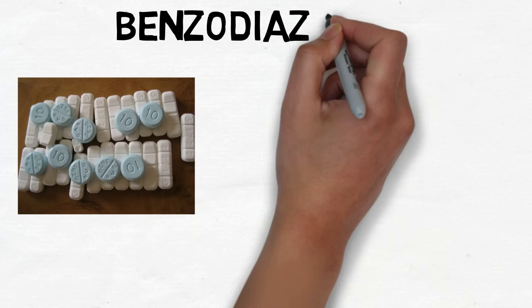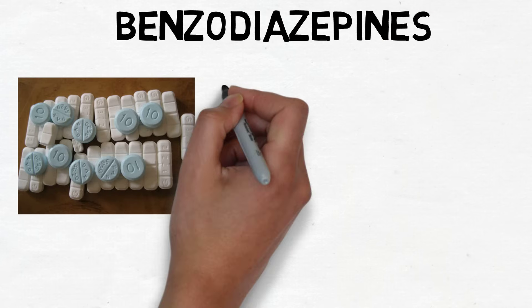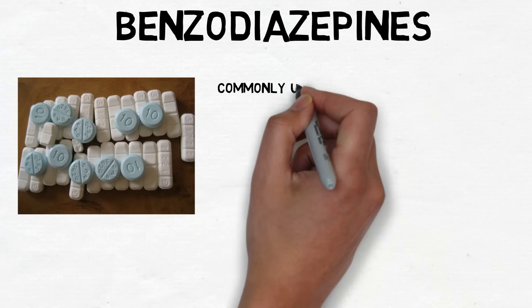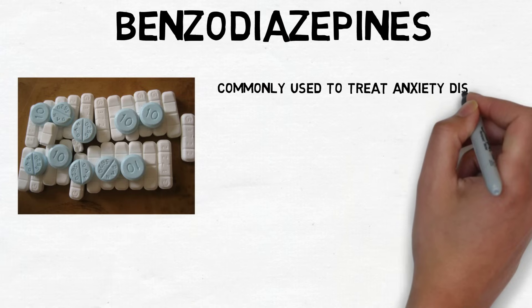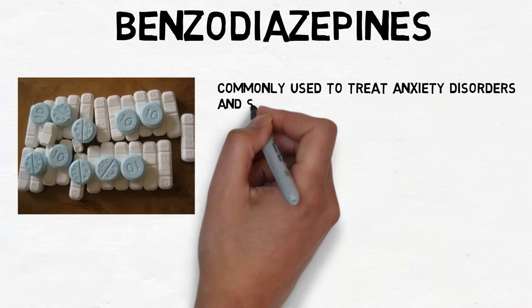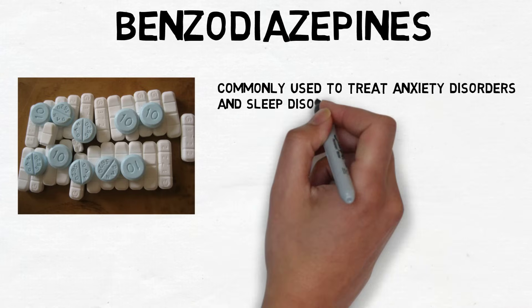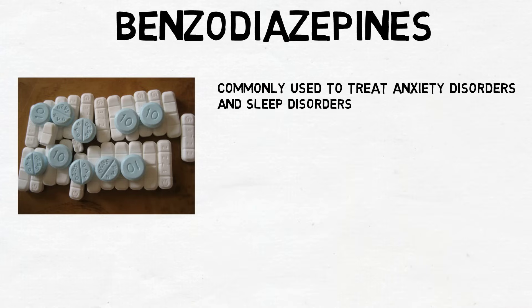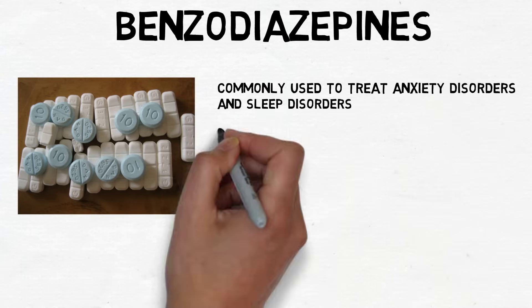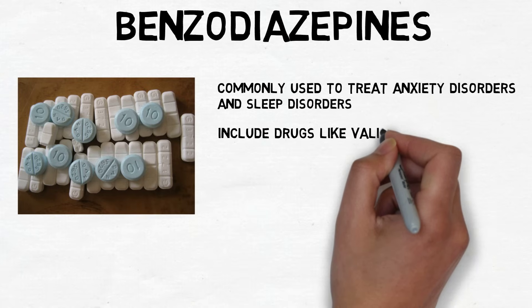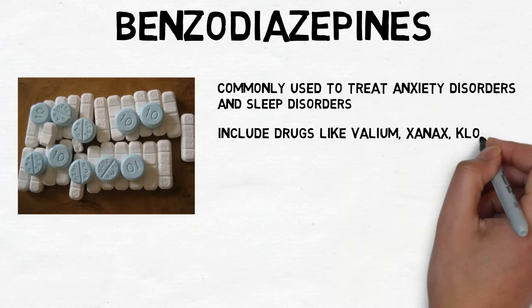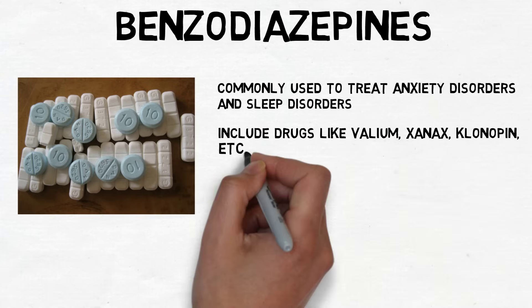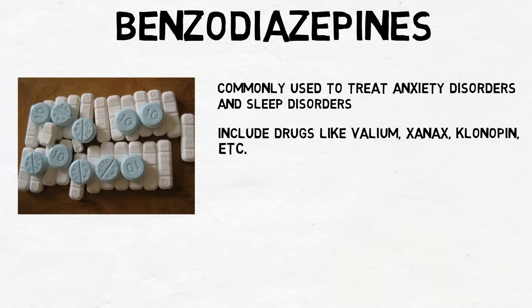Benzodiazepines are a class of drugs named for their chemical structure that are commonly used to treat anxiety disorders and sleep-related disorders. They include well-known drugs like Valium, Xanax, and Klonopin. There are dozens of drugs in the benzodiazepine class, but the mechanism by which they all exert their effects is thought to be similar.